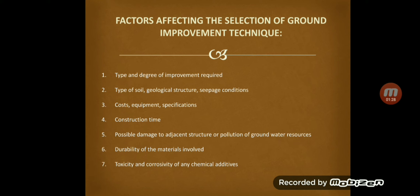Next is durability of the materials involved, which includes short-term and long-term considerations or corrosion in aggressive soil conditions, etc. Next is toxicity and corrosivity of any chemical additives — government regulations have restricted the choice of some additives which are toxic in nature.